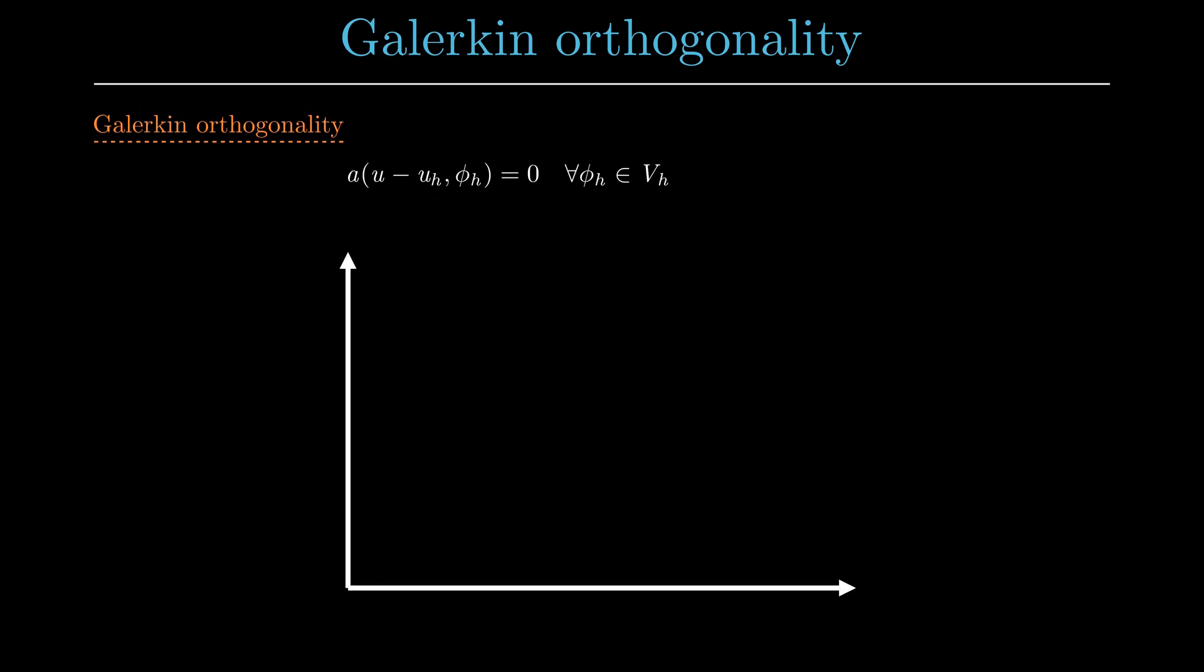We can also try to visualize this with a simple drawing in a two-dimensional plane, which should represent the function space v. We use the horizontal axis as our subspace vₕ. We can add the solutions of our weak forms to our drawing, the functions u and uₕ.